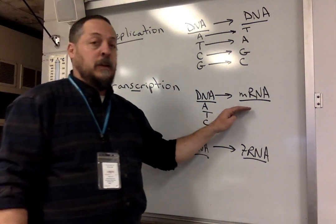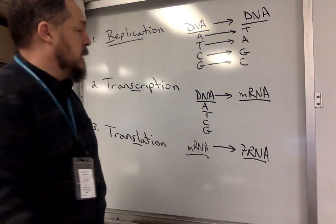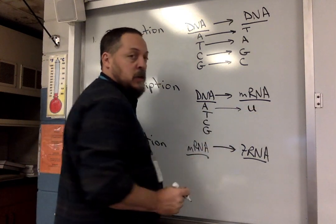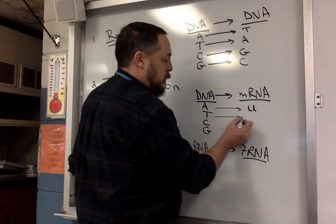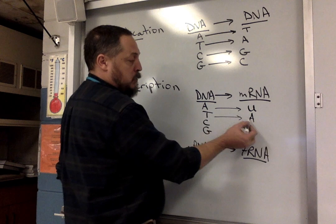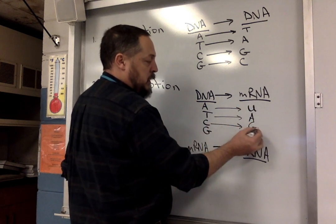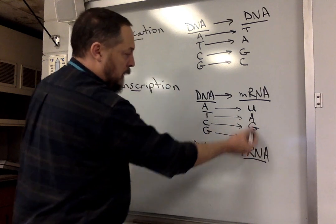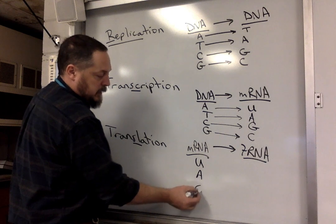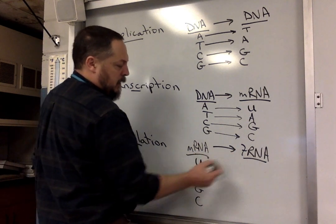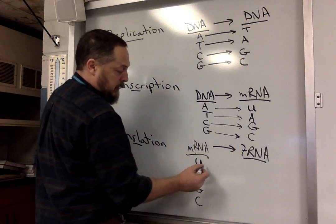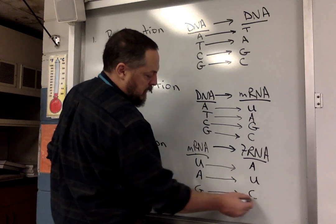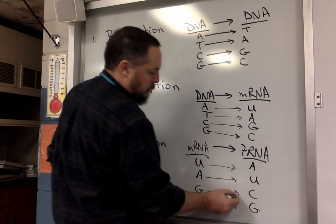RNA doesn't have thymine, so when going from DNA to RNA, A in the DNA pairs with U (uracil), T in the DNA pairs with A in RNA, C still pairs with G, and G still pairs with C. When going from RNA to RNA — mRNA to tRNA — U pairs with A, A pairs with U, G pairs with C, and C pairs with G.